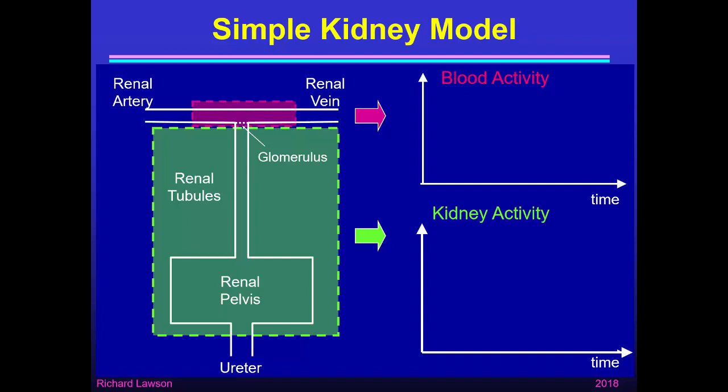Let's see what happens if we have a small bolus of radiopharmaceutical entering the kidney through the renal artery. It comes into the red region of interest, so the activity in the red region rises because of this sharp bolus input. When it reaches the glomerulus, some activity is extracted from the blood into the tubules — by glomerular filtration, tubular secretion, or a combination. The activity that moves from the red into the green region is the radiopharmaceutical extracted by the kidney, representing uptake — essentially what we're trying to measure with the renogram.